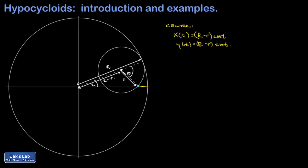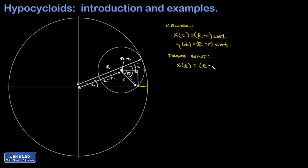To find the location of the trace point on the edge of the small circle, we start at the center of that circle. Drawing a small right triangle, the angle in that triangle is theta minus t. The x-coordinate of the trace point is the x-coordinate of the center plus little r times cos(θ − t). Similarly, the y-coordinate is the y-coordinate of the center minus little r times sin(θ − t).